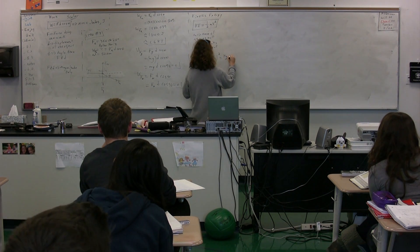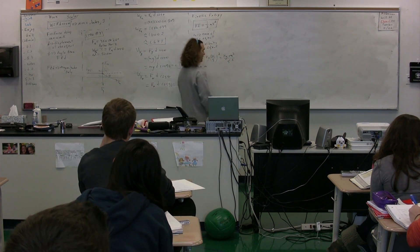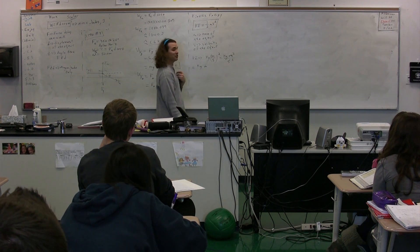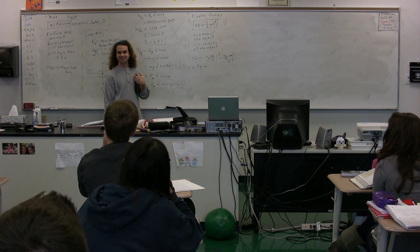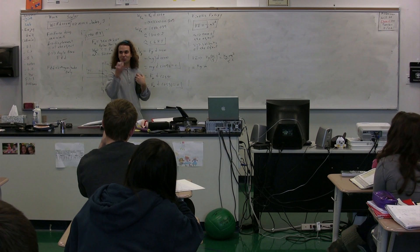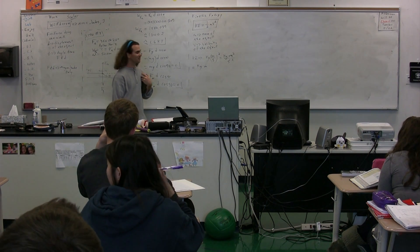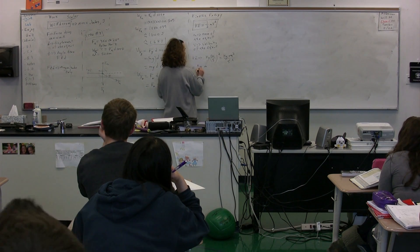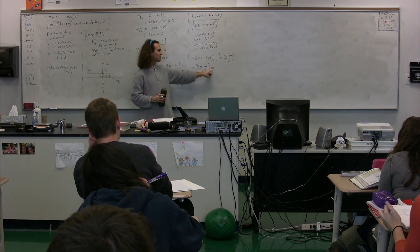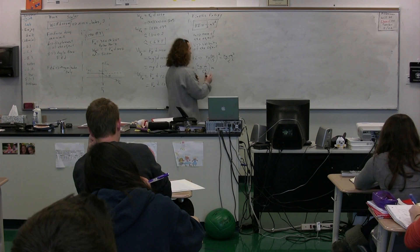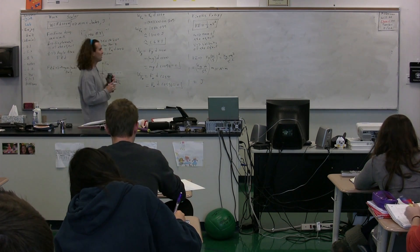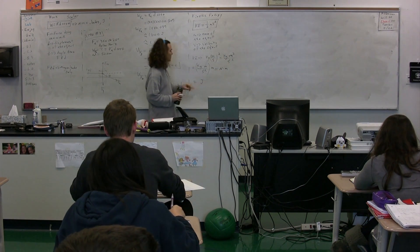This equals kilograms times meters squared over seconds squared. That equals one joule — because a newton is a kilogram times a meter over a second squared, so that gives you a newton times a meter. Rather than having meters squared, I have meters times meters, and we know a kilogram times a meter per second squared is equal to a newton. So yes, it works out to be joules, which you need to be able to show. We have kilograms times meters squared over second squared, which works out to be joules.